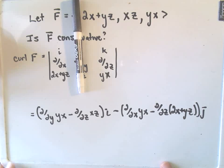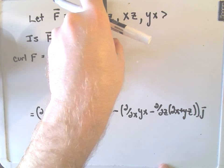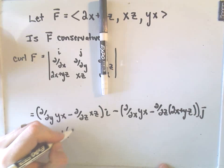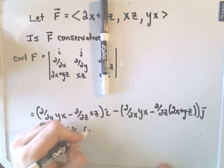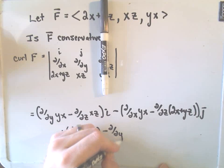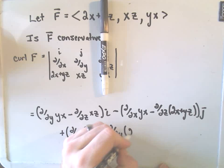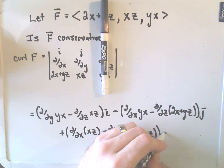Writing a little big here. And then we'll get our k-component. For that part, we'll get the partial with respect to x of xz minus the partial with respect to y of the 2x plus yz.